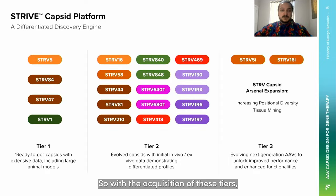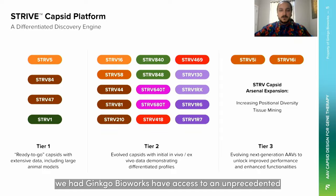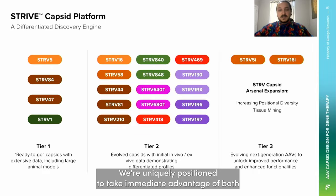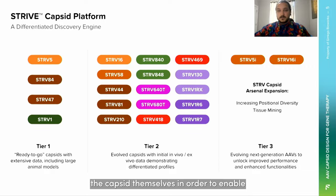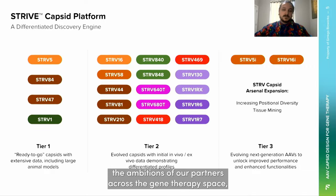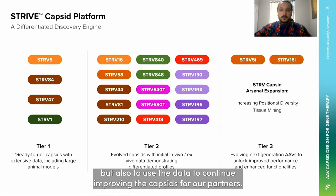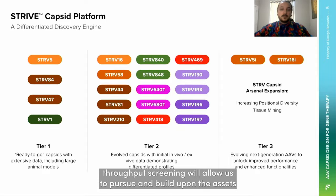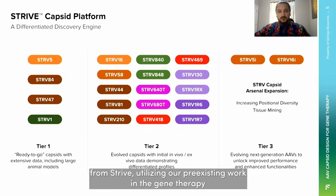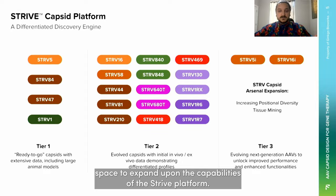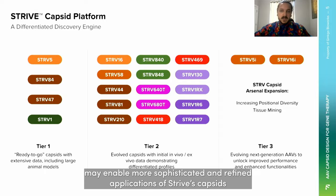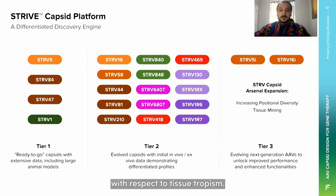With the acquisition of these tiers, we at Ginkgo Bioworks have access to an unprecedented depth of data around the structure-function relationship of the AAV capsid. We're uniquely positioned to take immediate advantage of both the capsids themselves to enable the ambitions of our partners across the gene therapy space, and also to use the data to continue improving the capsids. Ginkgo's institutional capacity for machine learning and automated high-throughput screening will allow us to pursue and build upon the assets from Stride, utilizing our pre-existing work in the gene therapy space to expand upon the capabilities of the Stride platform. For instance, Ginkgo's ability to engineer regulatory elements may enable more sophisticated and refined applications of Stride's capsids with respect to tissue tropism.